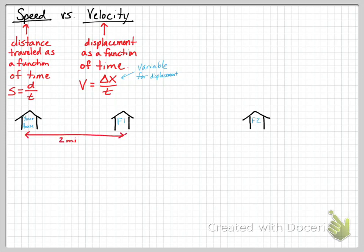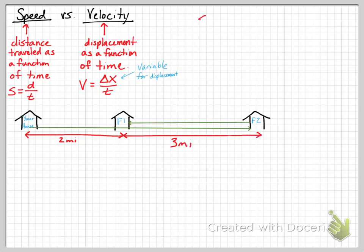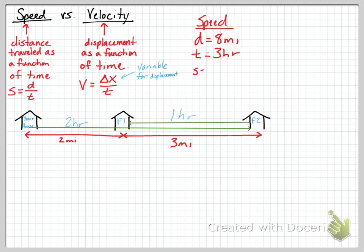Let's recreate our number line with your house, friend one two miles away, and friend two five miles total from your house. You went to friend two's house and then back to friend one's house. To find the speed, we take the total distance traveled — eight miles — and divide by total travel time. The trip to friend two's house took two hours, and the trip to friend one's house took one hour, for a total of three hours of travel time. So speed equals 8 divided by 3, which equals 2.67 miles per hour.